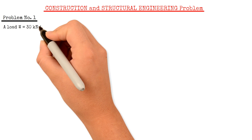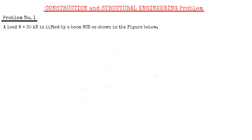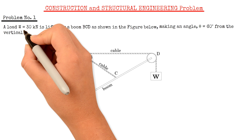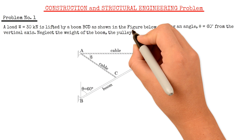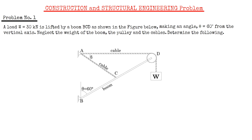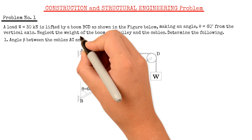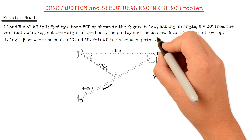The problem is: a load W equals 30 kN is lifted by a boom BCD as shown in the figure below, making an angle theta equals 60 degrees from the vertical axis. Neglect the weight of the boom, the pulley, and the cables. Determine the following: first, the angle beta between the cables AC and AD, where point C is in between points B and D.